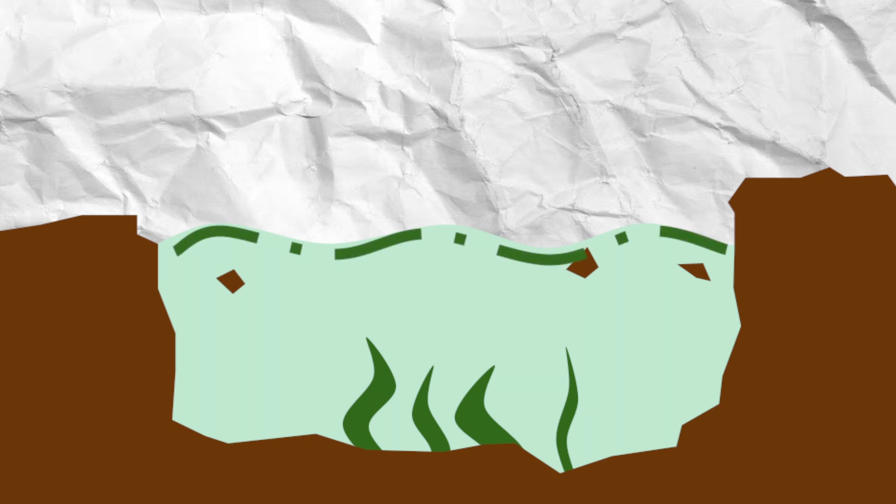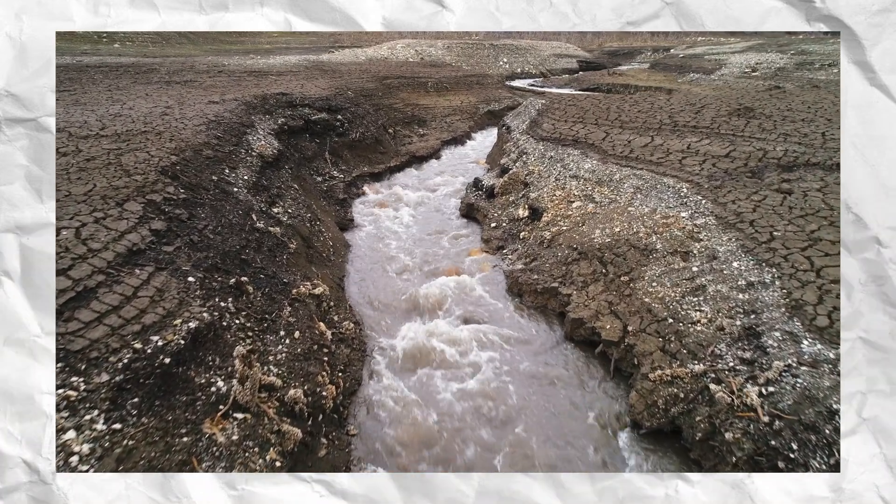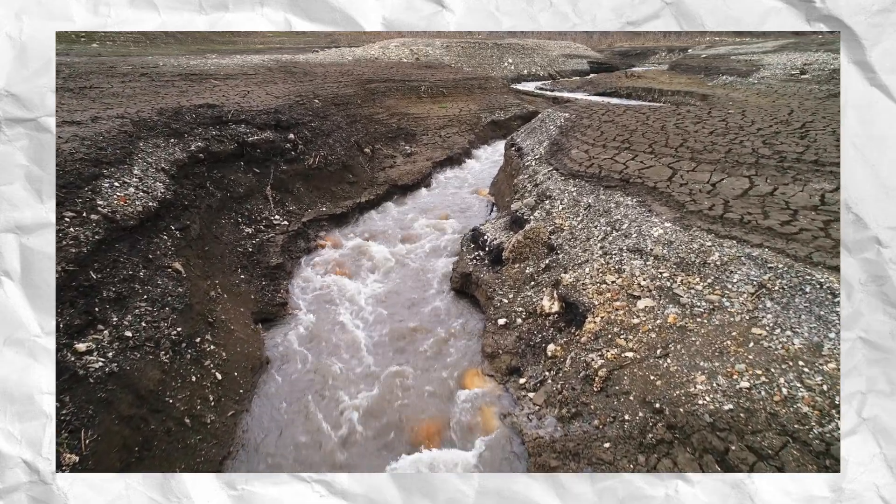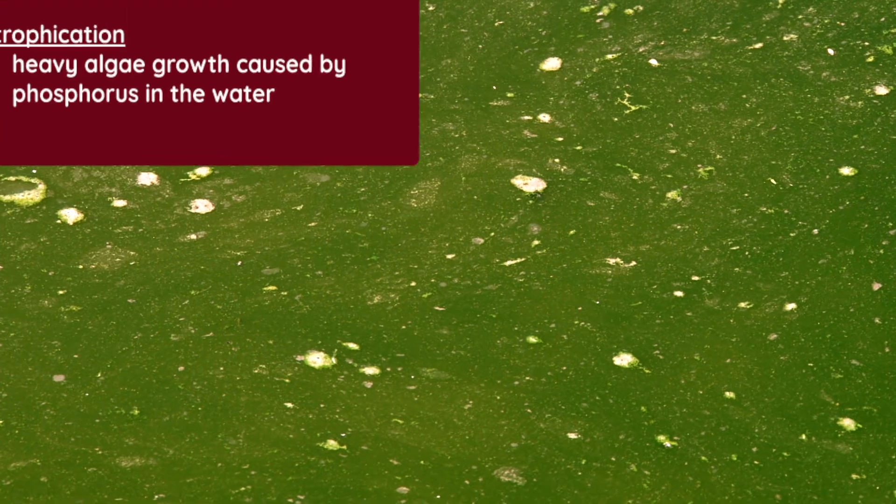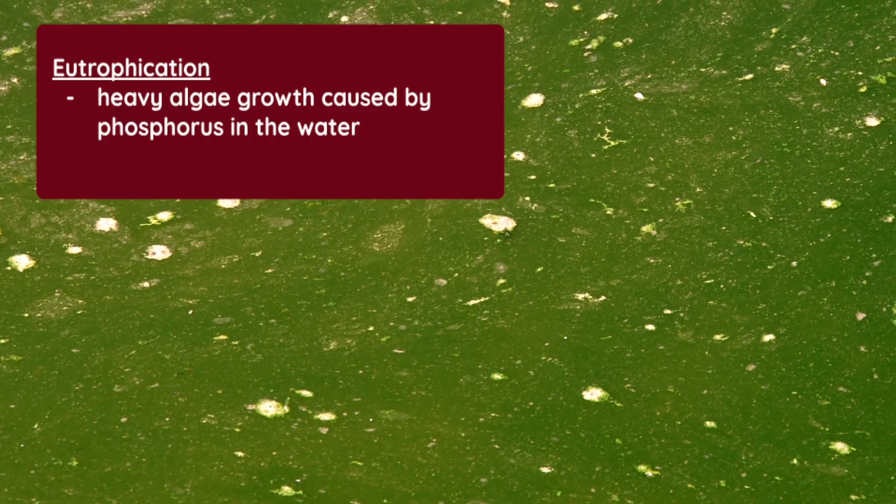This excess amount of algae can kill other plant life in the waters and eventually suffocate the fish swimming in the river. One study in Vermont found that during one of the heaviest rainstorms, more sediment and phosphorus leached into the stream than the entire previous year. The effects of eutrophication, or heavy algal growth caused by phosphorus in the water, will be felt in that river for years to come.